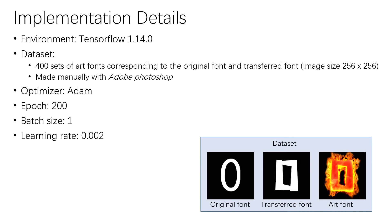About our implementation, we use TensorFlow 1.14.0 as the development environment. The dataset consists of 400 sets of art fonts corresponding to the original font and the transferred font. The image size is 256 by 256 and they are made manually with Adobe Photoshop. The training optimizer is Adam, number of epochs is 200, batch size is 1, and learning rate is 0.002.